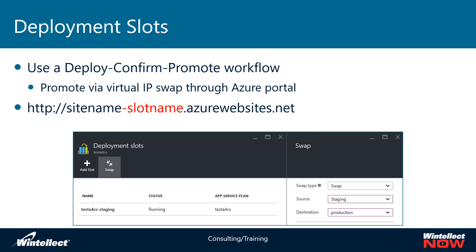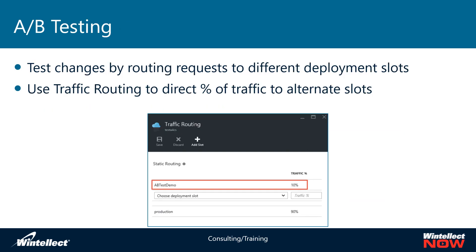With deployment slots you can also do A/B testing, which allows you to divert certain percentages of traffic to one deployment slot and another percentage to a different slot. This lets you see how a website reacts to traffic versus another deployment slot, essentially testing one site against another to see how they perform during A/B testing.